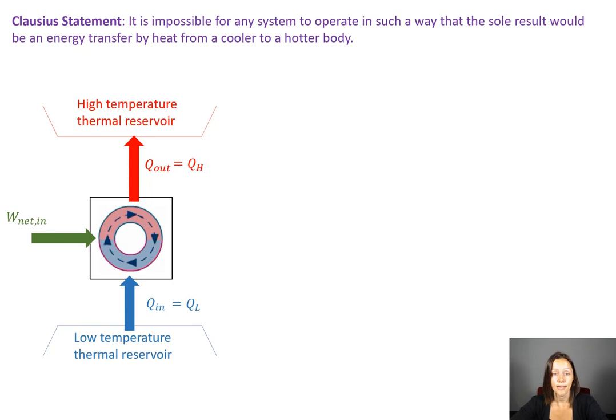All right. Now let's look at the Clausius statement. It says it is impossible for any system to operate in such a way that the sole result would be energy transfer by heat from a cooler to a hotter body. So with a refrigeration or a heat pump cycle, which is what we're looking at right now,